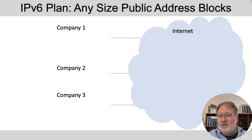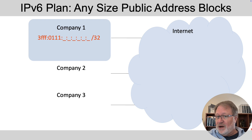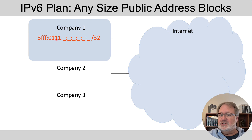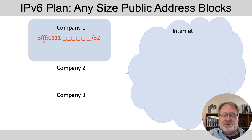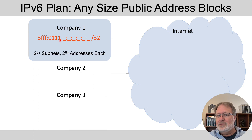Let's talk about address allocation. Each company would apply for and be assigned a global routing prefix — similar to a Class A, B, or C network in IPv4 in that it's globally unique; no other company should use those same addresses. For example, company 1 gets all addresses beginning with 3xxx:0111. IPv6 addresses are hexadecimal: four digits colon four digits colon four digits, and so on, for 32 hex digits long. A /32 prefix means the first eight hex digits must match. If you subnet that prefix normally, you'd create 2 to the 32nd subnets, each with 2 to the 64th addresses.